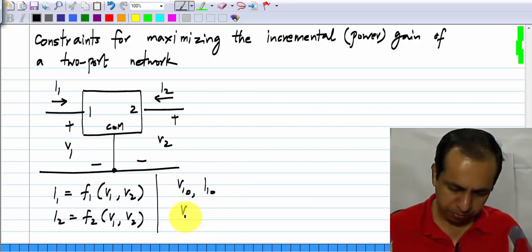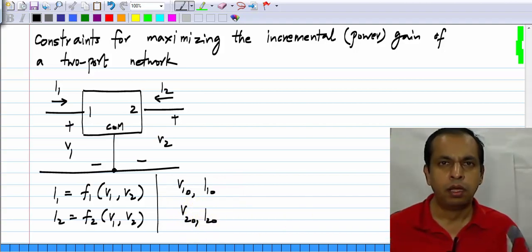At the operating point we have the port one and port two currents.